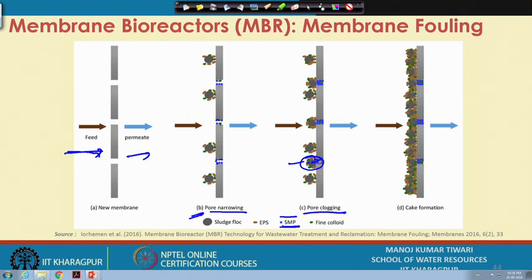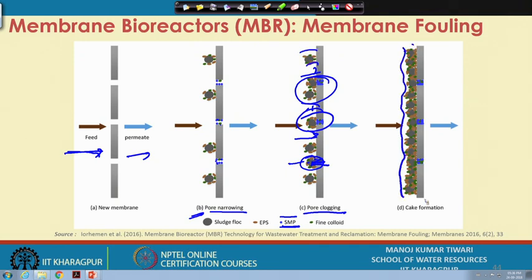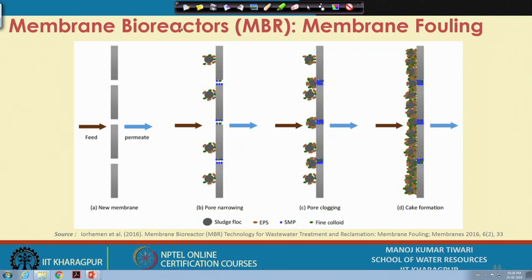After pore narrowing, materials diffuse inside the pores, leading to pore clogging. Eventually, if not removed, things stick on the surface since there is no passage through the clogged pores — slowly a cake forms on the membrane surface, which is called cake formation. At this stage, the flow through the membrane is completely stopped and one cannot obtain the desired treatment or retention from the membrane system.